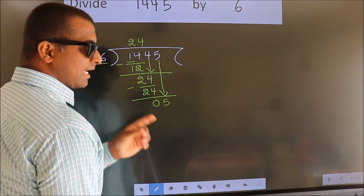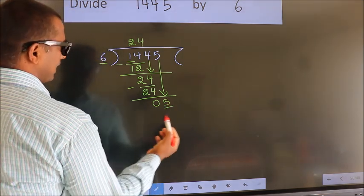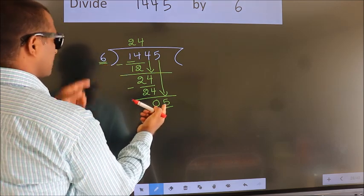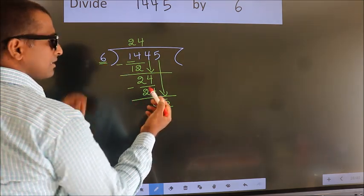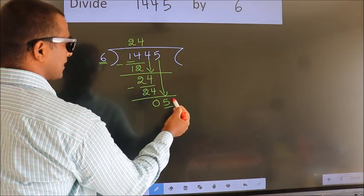After this step, the mistake happens. And the mistake is this: here we have 5, here 6. 5 is smaller than 6, so what many do is they directly put dot, take zero, which is wrong.